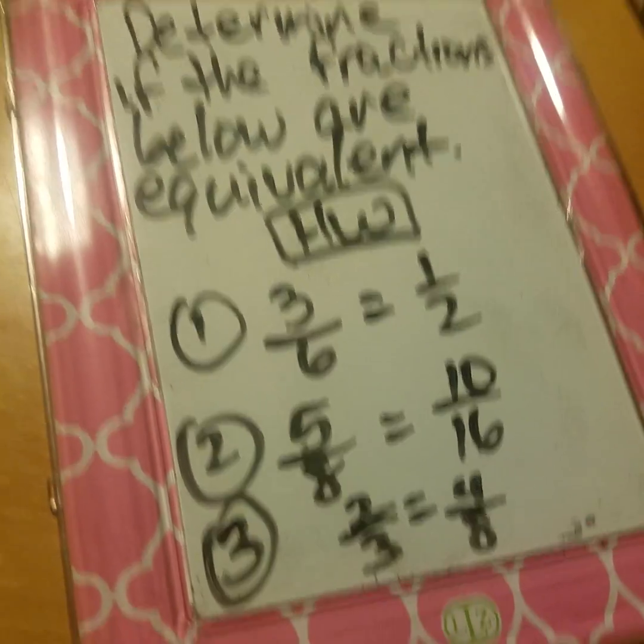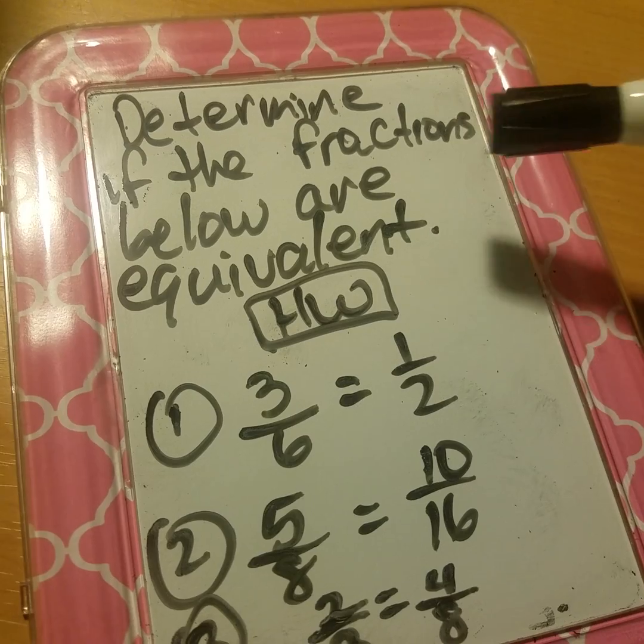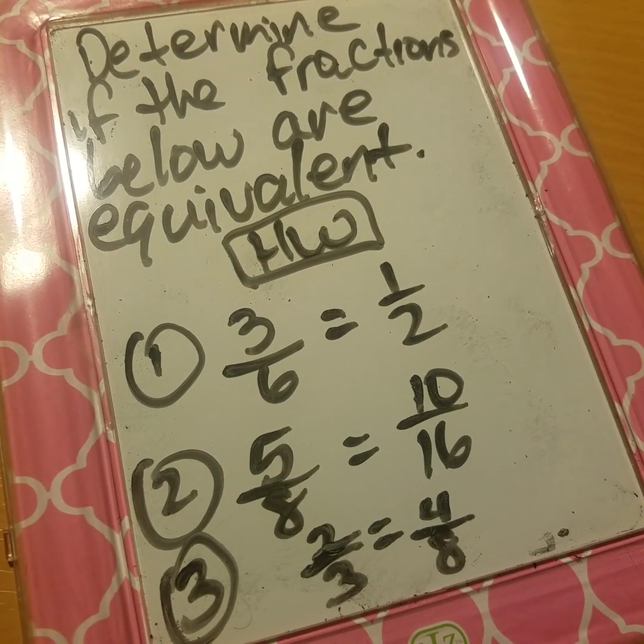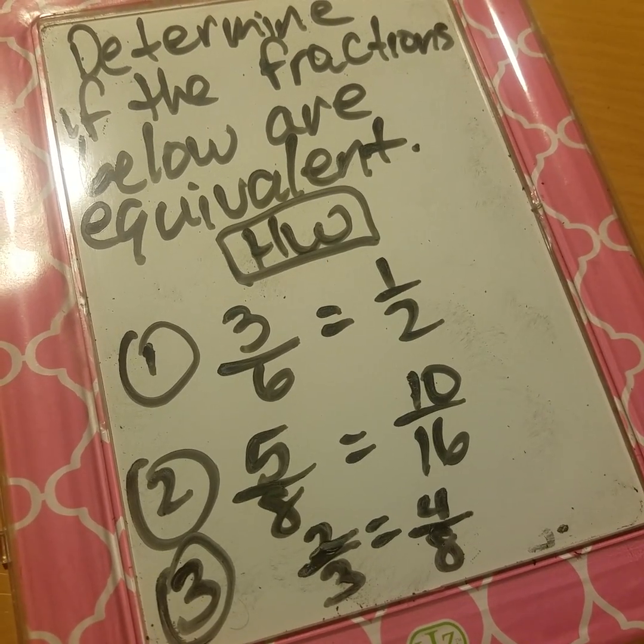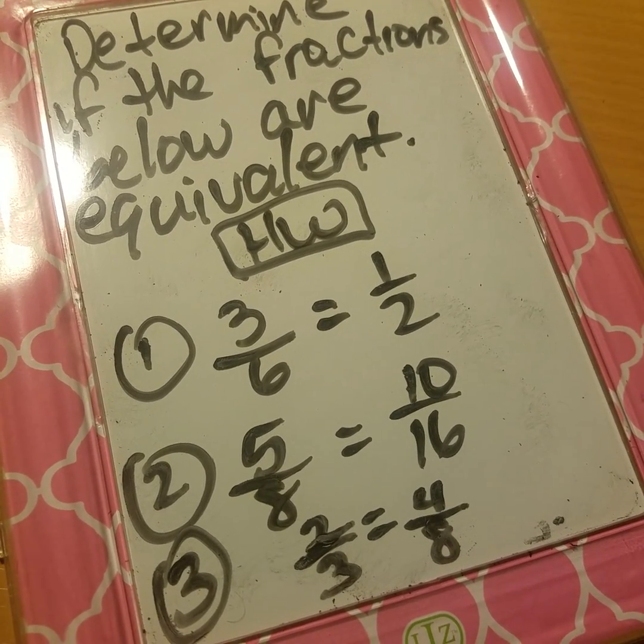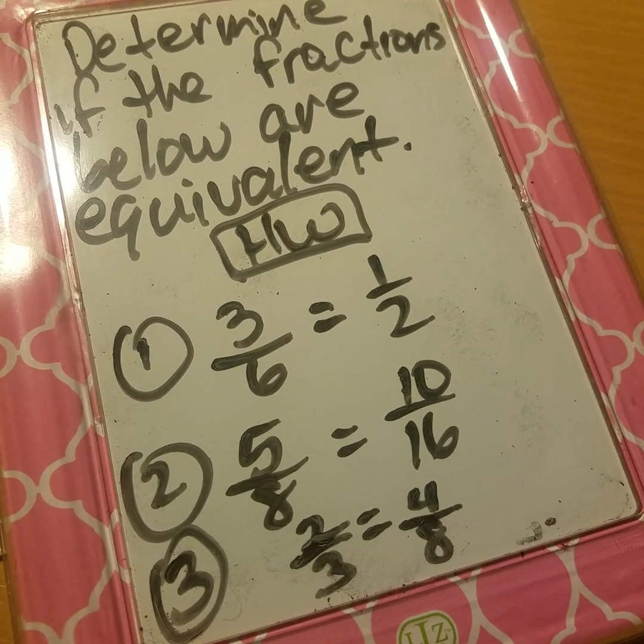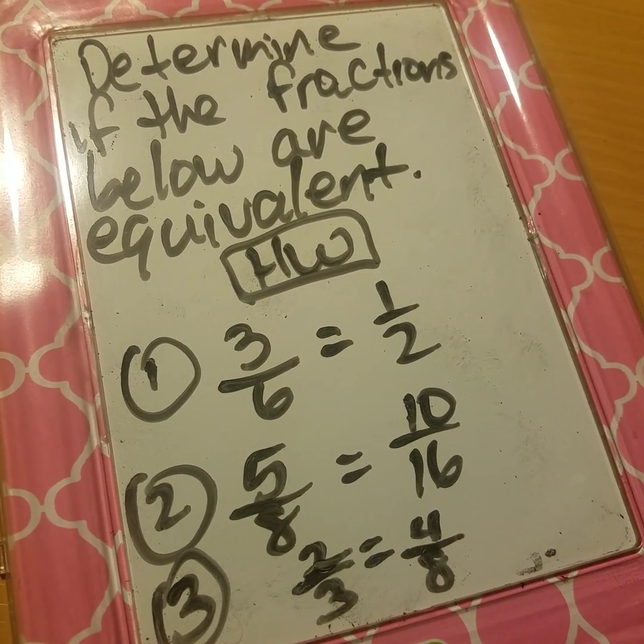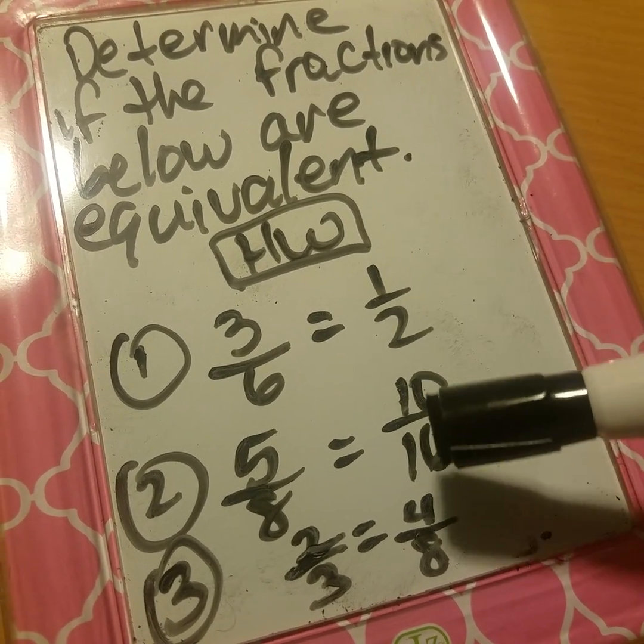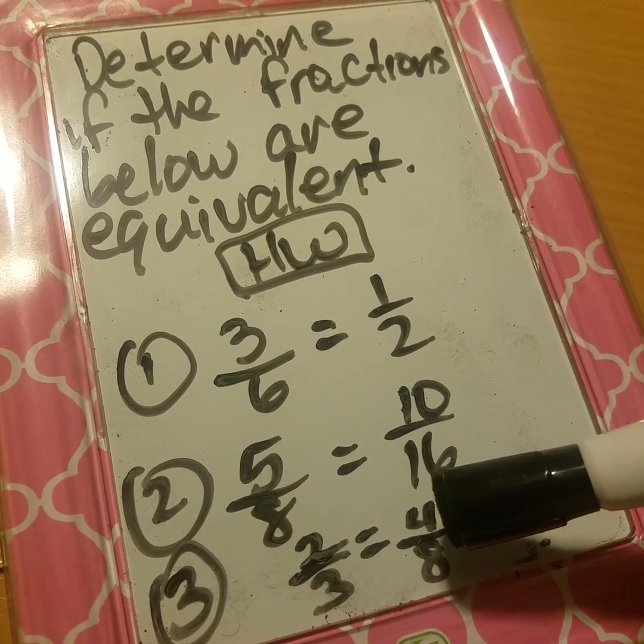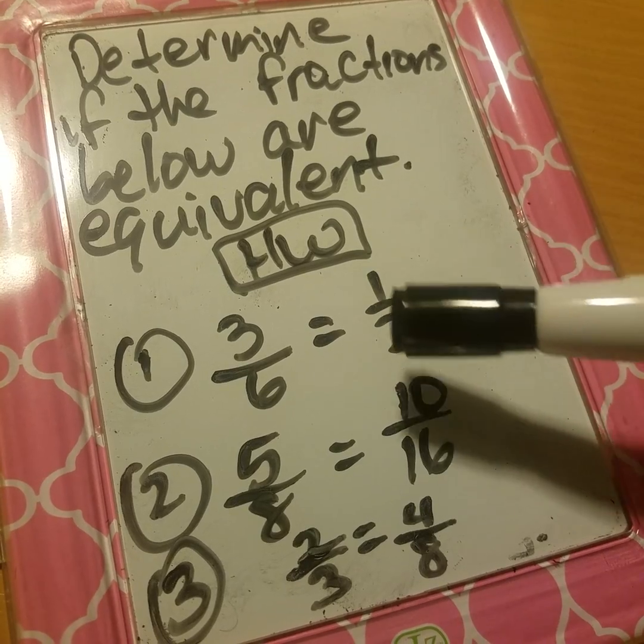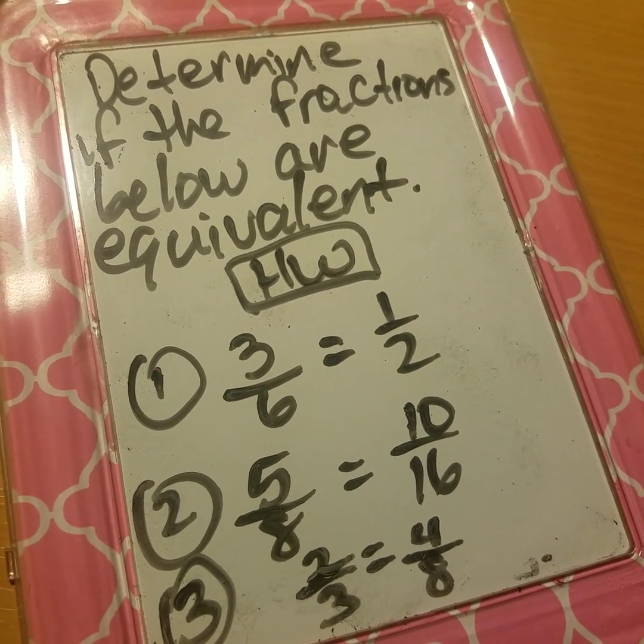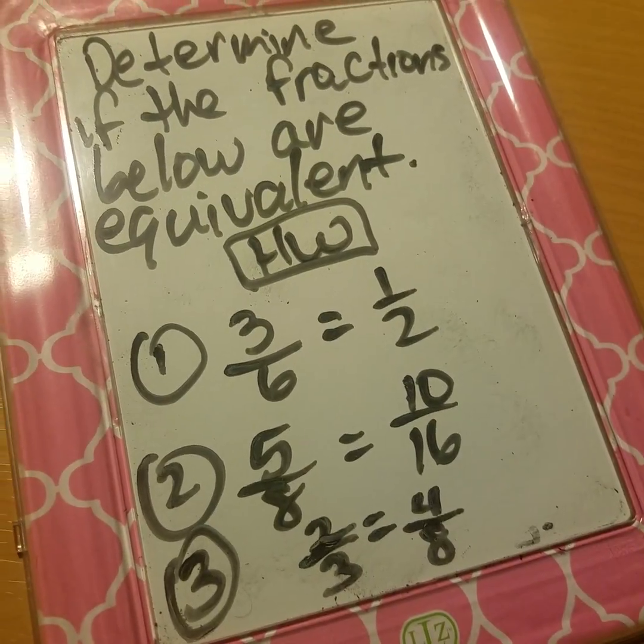Your homework problems: determine if the fractions below are equivalent. Number one: three-sixths equals one-half. Two: five-eighths equals ten-sixteenths. Three: two-thirds equals four-eighths. You can use whatever strategy you choose, but make sure you're showing your work and proving your response. Have a great day, young men.